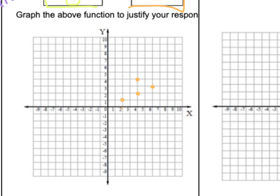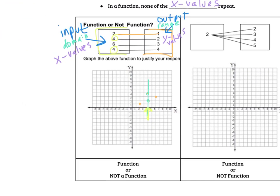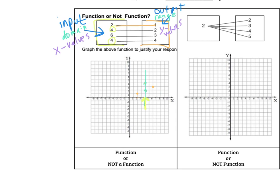So the reason this is not a function is the input of 4 has 2 outputs. So if I drop a line right here, these 2 points hit my line twice. And we'll get to that, it's called the vertical line test. So function or not a function, the first one is not a function, and it happened right here when these 4s repeated. So to be a function, every input has to have exactly one output.